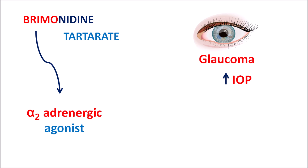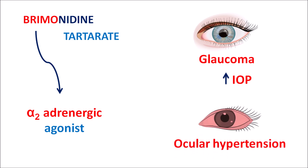Glaucoma involves increased pressure and pain within the anterior chamber of the eye, which if untreated may result in the loss of vision. In such conditions, brimonidine can be given to reduce the intraocular pressure. Similarly, this drug can also be used to control ocular hypertension, where there is increased blood pressure in the eye resulting in increased pain and redness of the eye.